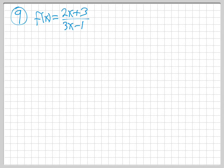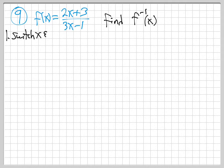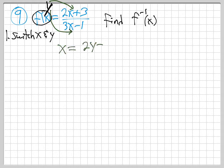Let's try number 9. Same two steps. Step one: switch x and y — f out here is really y. So every x becomes y and y becomes x. It becomes x equals (2y plus 3) over (3y minus 1). Step two: solve for y.